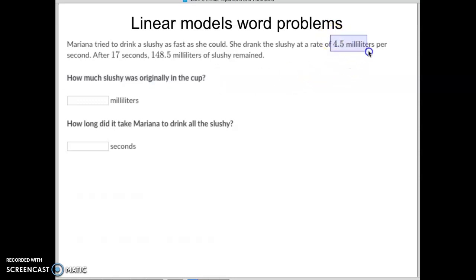Let's see here. She's been drinking 4.5 milliliters and she's been doing that every second for 17 seconds. First thing we've got to do is we have to take that 4.5 times by 17 seconds to know that she's already drank 76.5 milliliters of slushie.